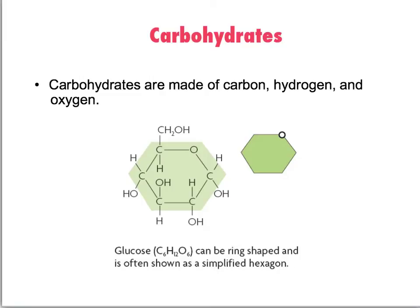The first macromolecule we're going to take a look at is carbohydrates, and its name sort of comes from hydrated carbon. It's a hydrocarbon skeleton with a whole bunch of hydroxyl groups on the end. In general, you can identify carbohydrates from their molecular formula — their recipe of atoms. They usually have a 1 to 2 to 1 ratio when it comes to carbon, hydrogen, and oxygen.